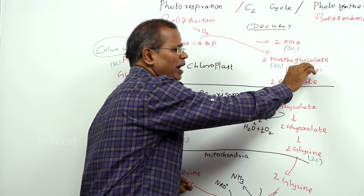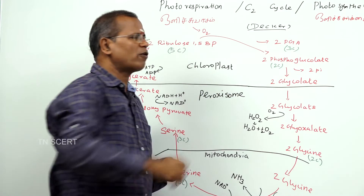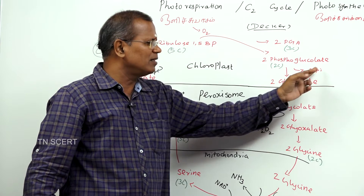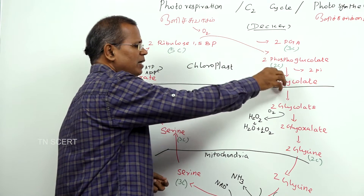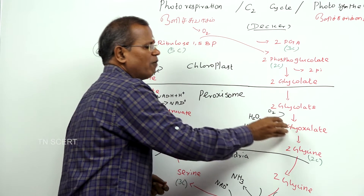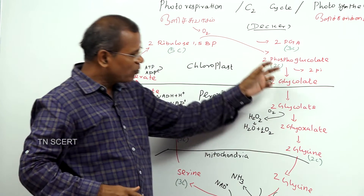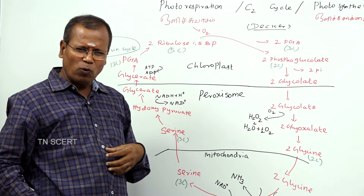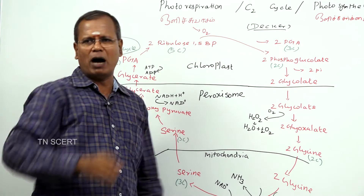Two molecules of phosphoglycolate are dephosphorylated to form two molecules of glycolate. This glycolate diffuses into the peroxisome, where it is converted into glyoxalate and hydrogen peroxide.